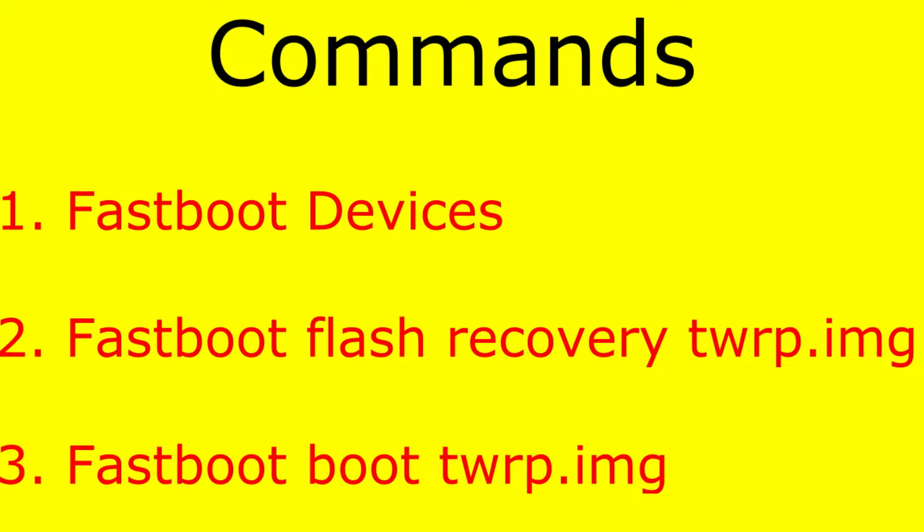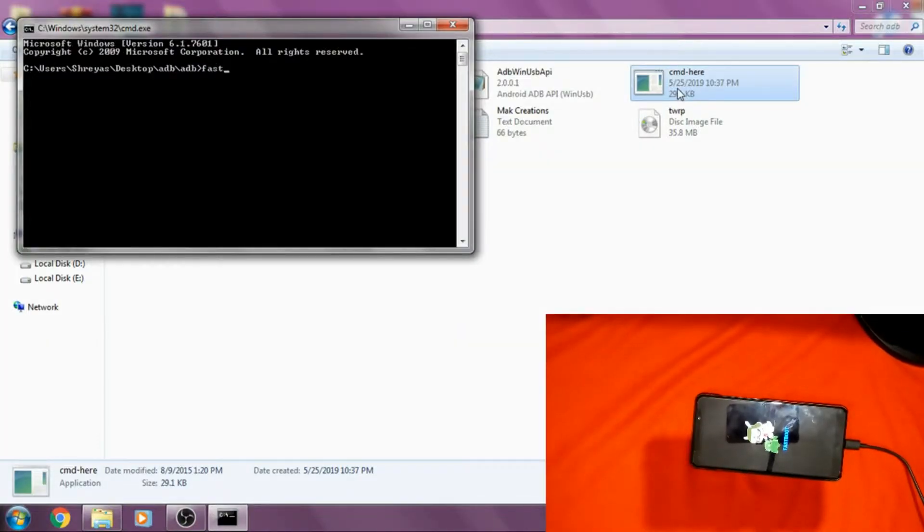And after that type 'fastboot flash recovery twrp.img' — don't forget to write .img otherwise your custom recovery file will not gonna install. This command will install the custom recovery into your phone. And after that type 'fastboot boot twrp.img' — this command will open the custom recovery on your phone.